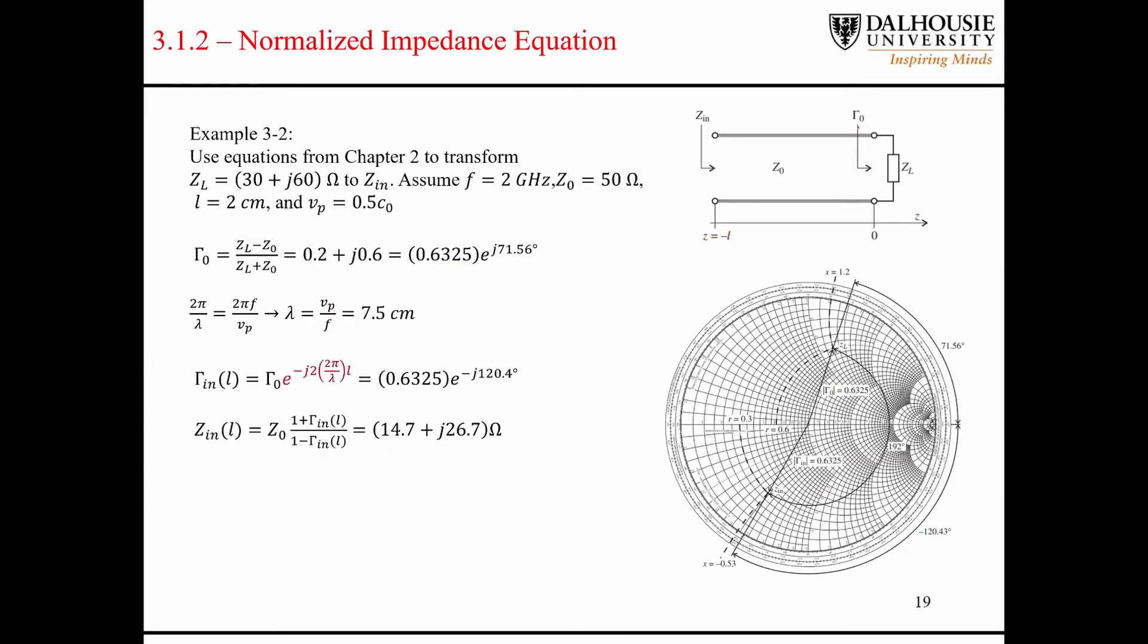So one thing that a transmission line does is it preserves the magnitude of the reflection coefficient. So when you measure the reflection coefficient at a load, and then you move some distance down the transmission line and take another measurement...